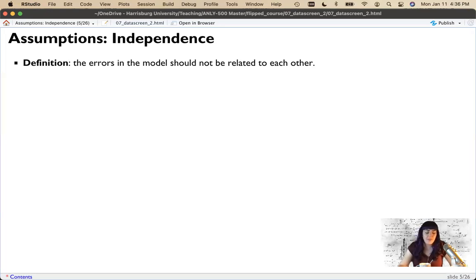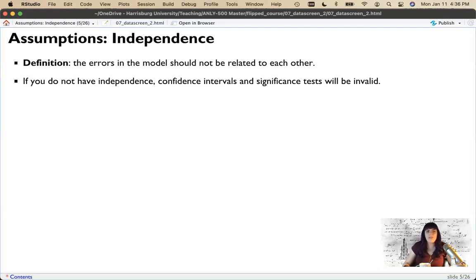When error terms are correlated, sometimes it's called autocorrelation. It does happen, but generally you just want to know that each person's scores are independent. Now in some studies, repeated measures, we allow scores to be related. So we take multiple scores from the same person. And there are statistical ways to deal with that. So you don't violate the assumption of independence as long as you use the right statistical test.